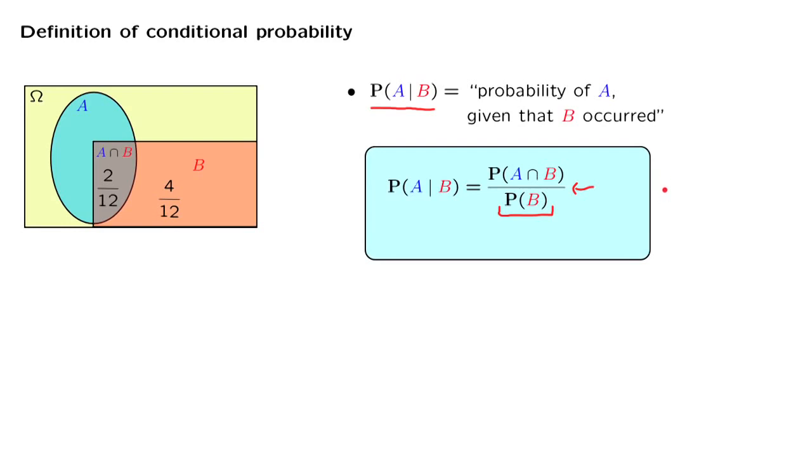Let us check that the definition indeed does what it's supposed to do. In this example, the probability of the intersection was 2 over 12, and the total probability of B was 6 over 12, which gives us 1 third, which is the answer that we had gotten intuitively a little earlier.